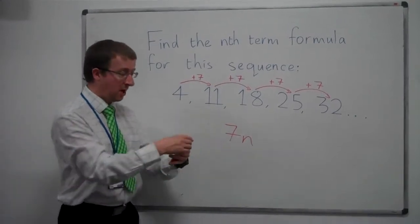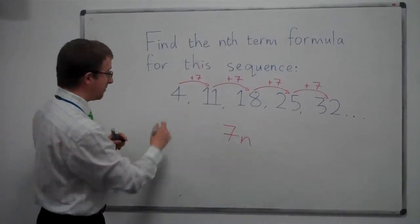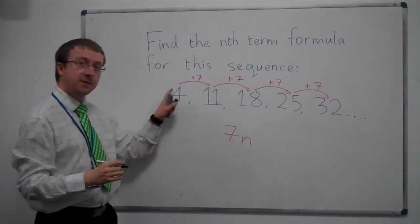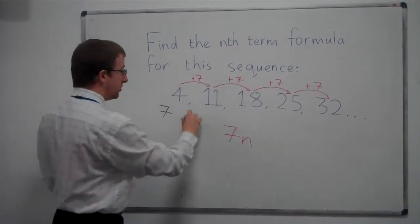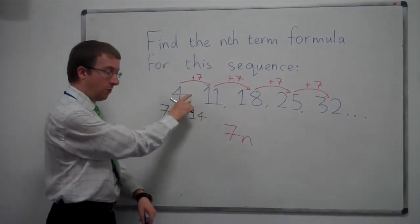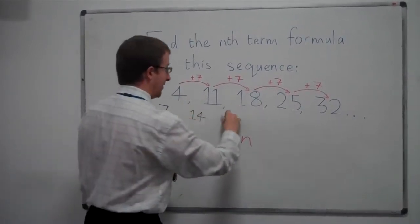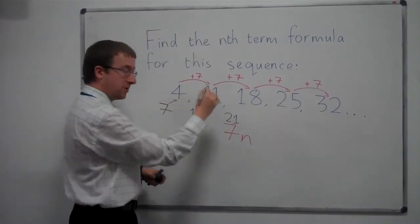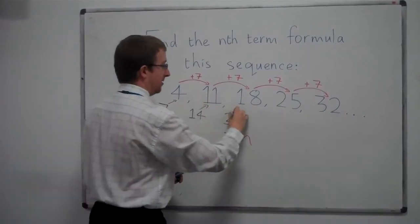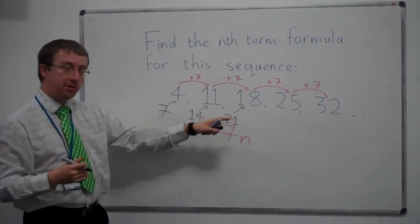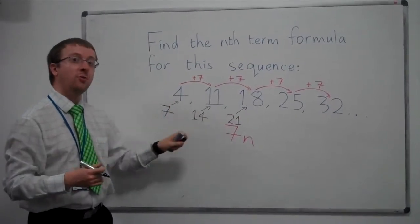So we need to finish this off by finding out how do we get from the 7 times table to the sequence. How do I get from 7 to 4, from 14 to 11, from 21 up to 18, and so on. And you can see, each time I need to take away 3.